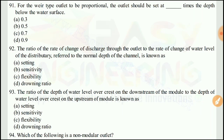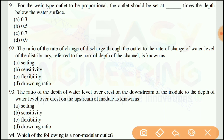Question 91: The ratio of the rate of change of discharge through the outlet to the rate of change of water level of the distributary, referred to as the normal depth of the channel, is known as the sensitivity. The right answer would be B.